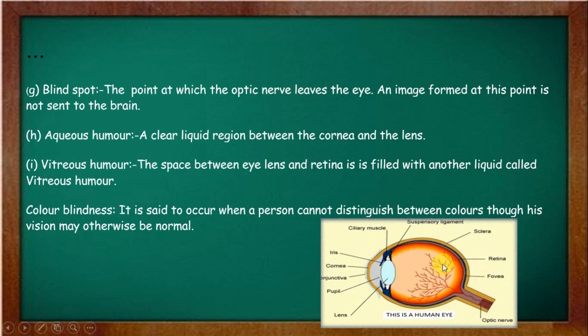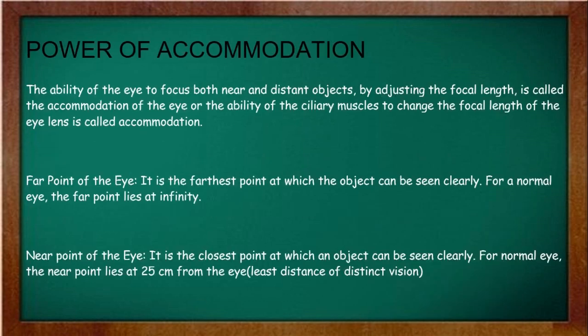Now, color blindness. Color blindness is a condition where a person cannot differentiate or distinguish between certain colors — for example, they cannot tell which color is red, blue, or black.